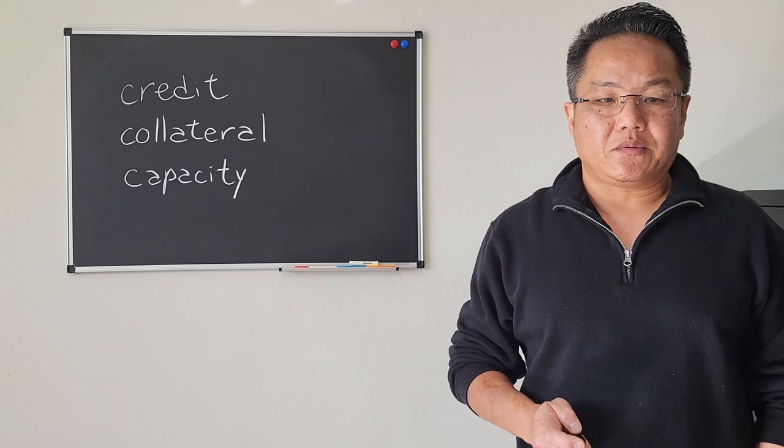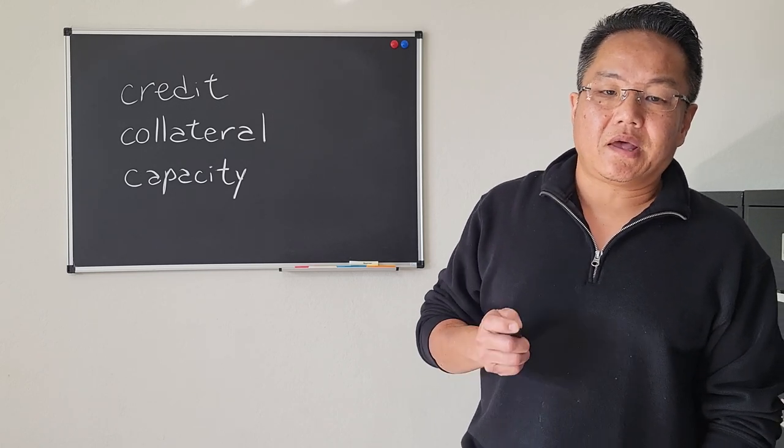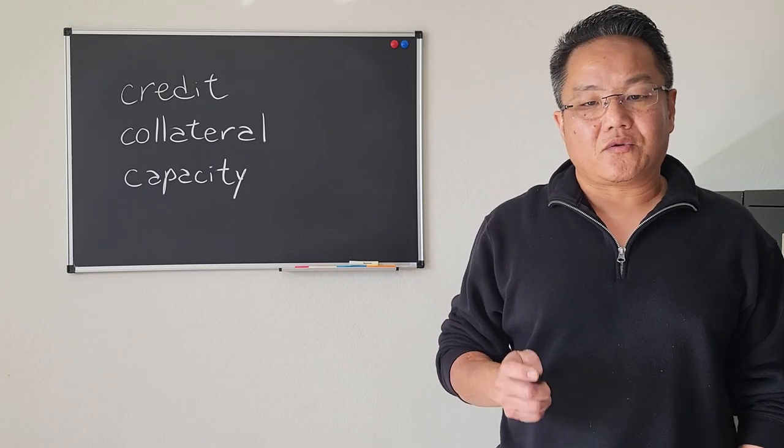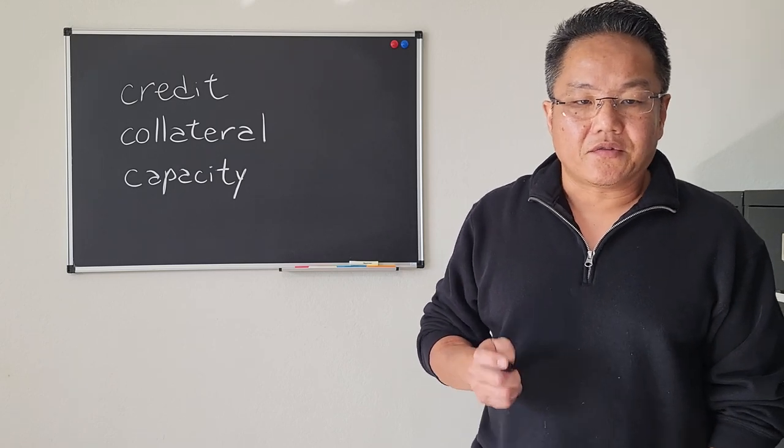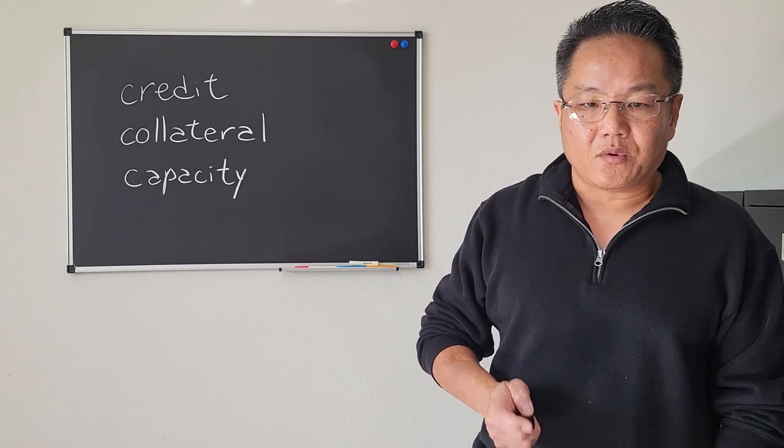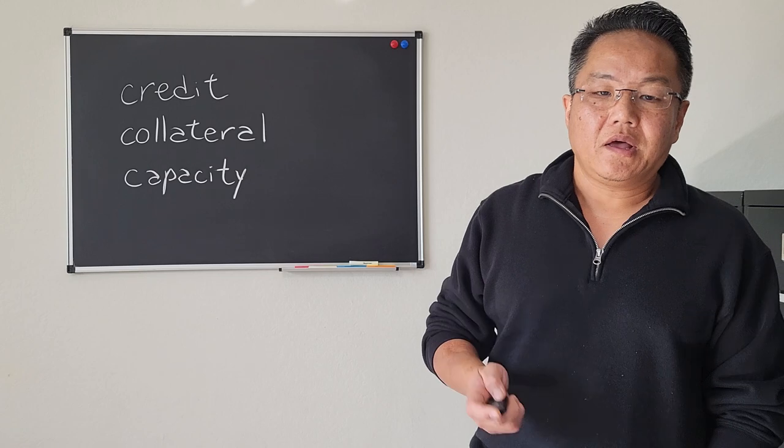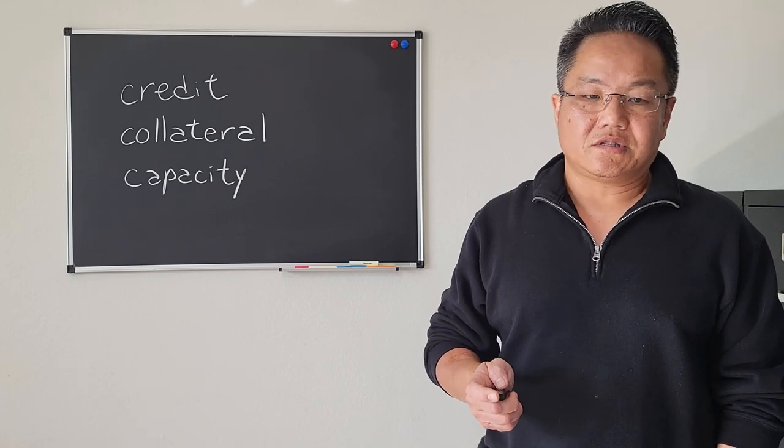There's a huge difference between a college student who has a 740 FICO because he's been paying on his first $2,000 credit limit Visa card on time versus someone else who has the same exact 740 credit score with 15 years of credit history, including prior home ownership and large auto loans that have since been paid off.